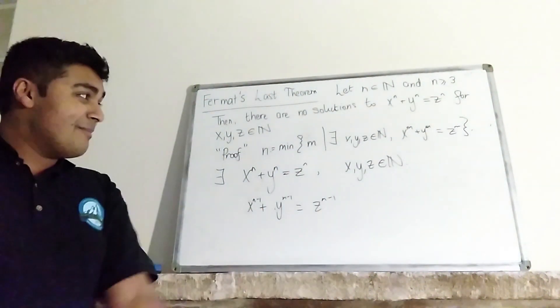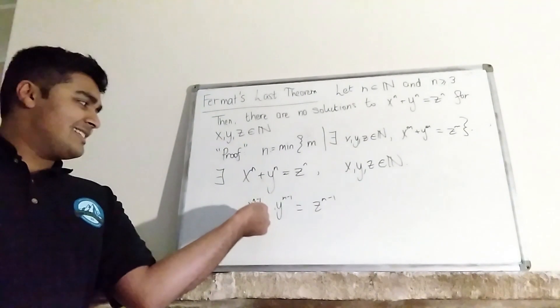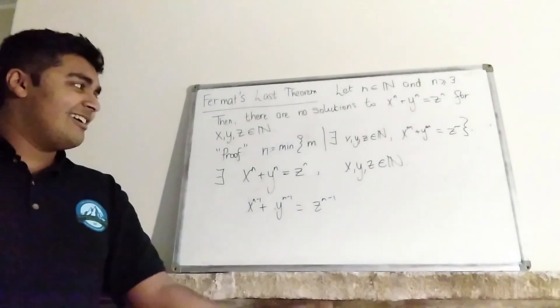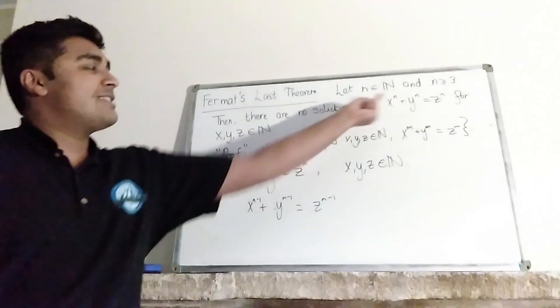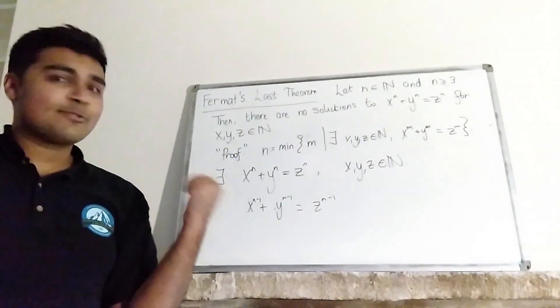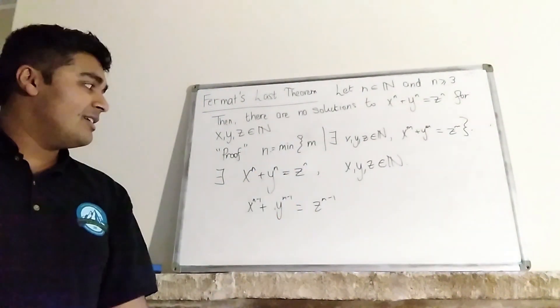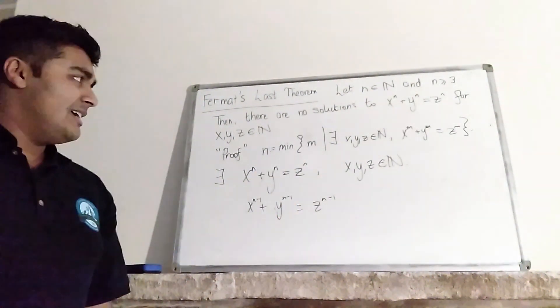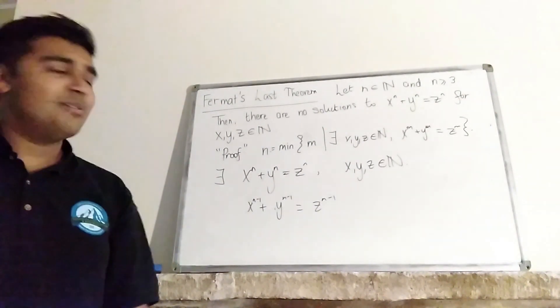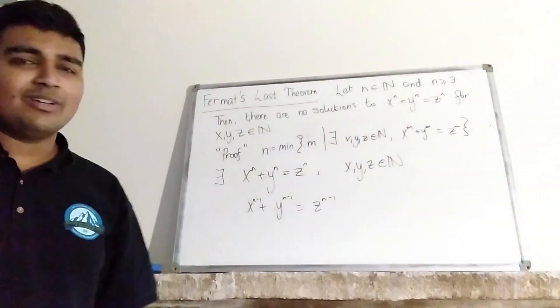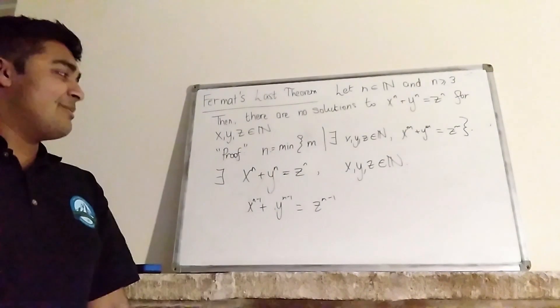But remember x, y, and z are natural numbers and x^(n-1) + y^(n-1) = z^(n-1) is something of this form except with n-1 in the exponent. And of course n is a natural number so certainly n-1 will be a natural number because n is bigger than or equal to 3.